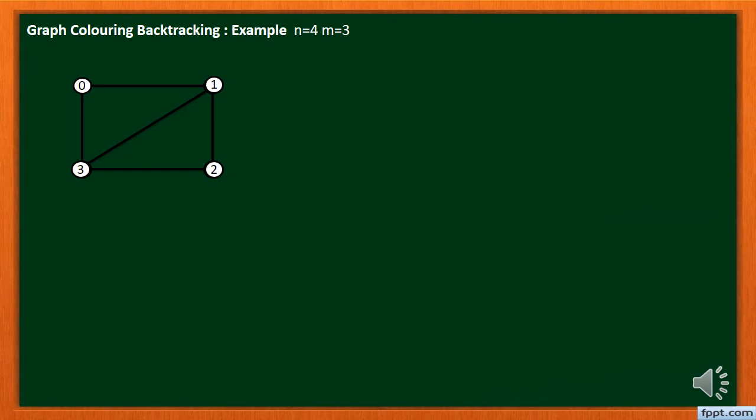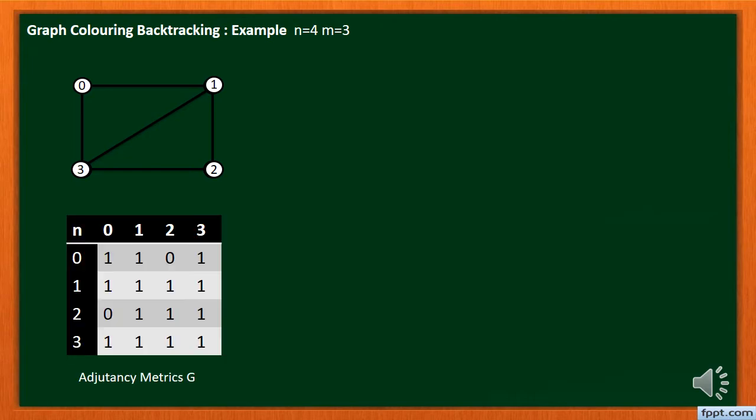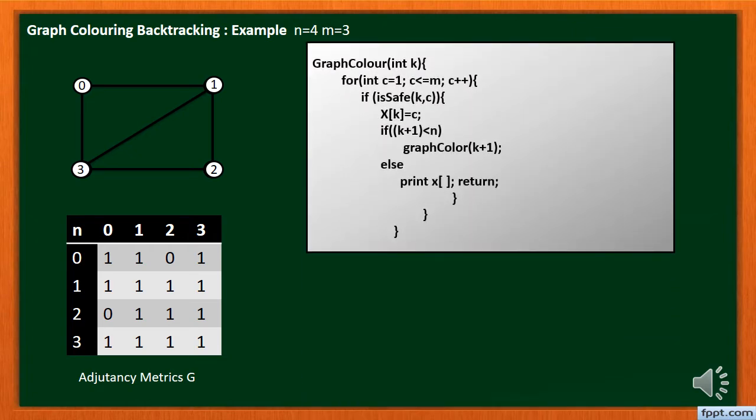Let's check the algorithm and start solving the problem with backtracking. In this algorithm K is the node that we're going to color in this level of recursion and X of K is an array that holds the current color at each node.